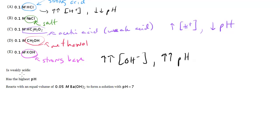That said, let's go to the choices. Is weakly acidic? Well, we've determined that the weak acid here is C, acetic acid. Has the highest pH. Again, it's going to be the strong base. It's going to have a very, very high pH, so that's going to be E.